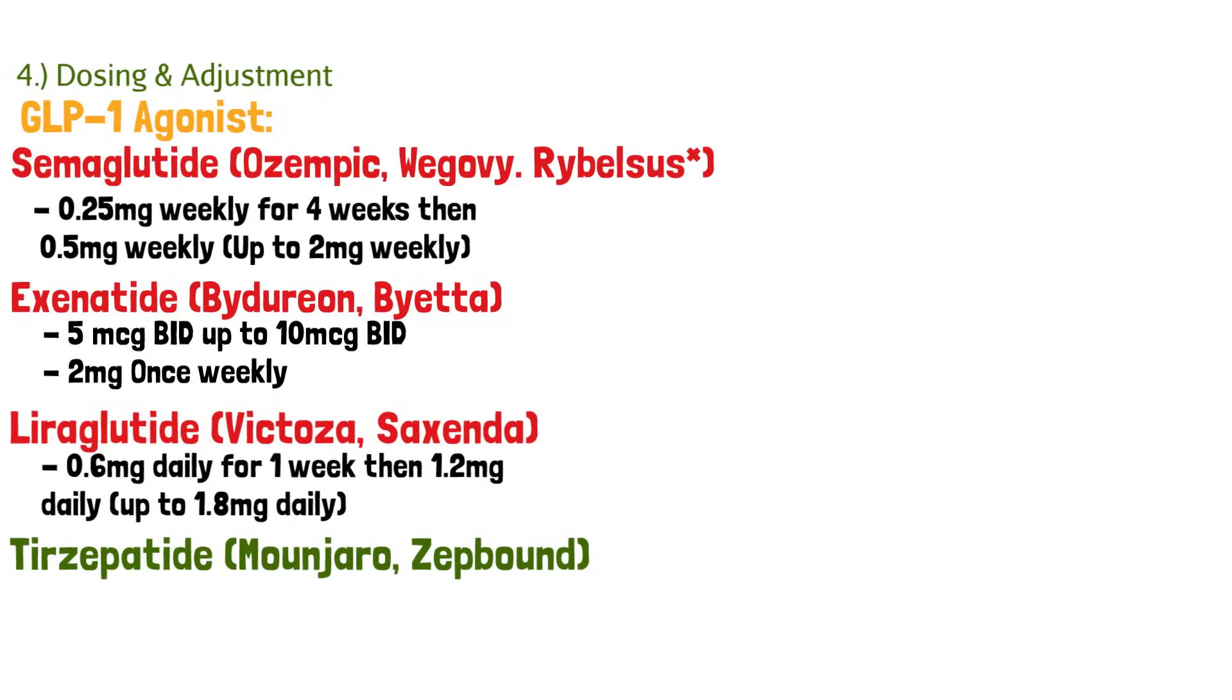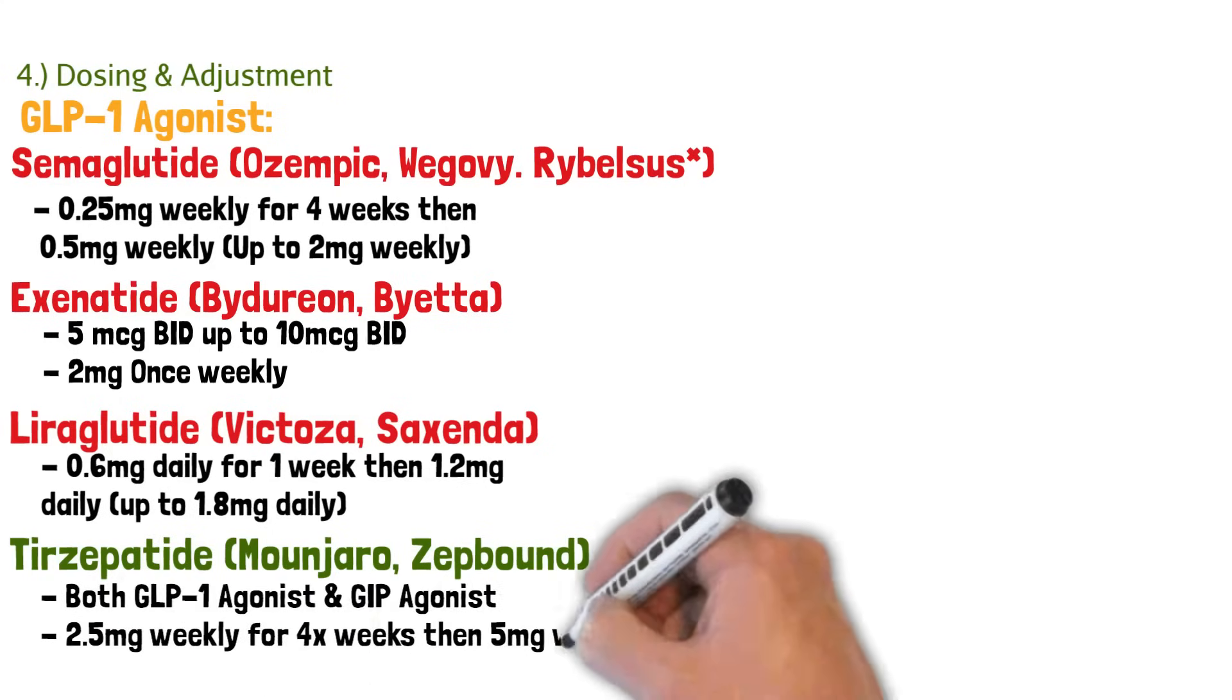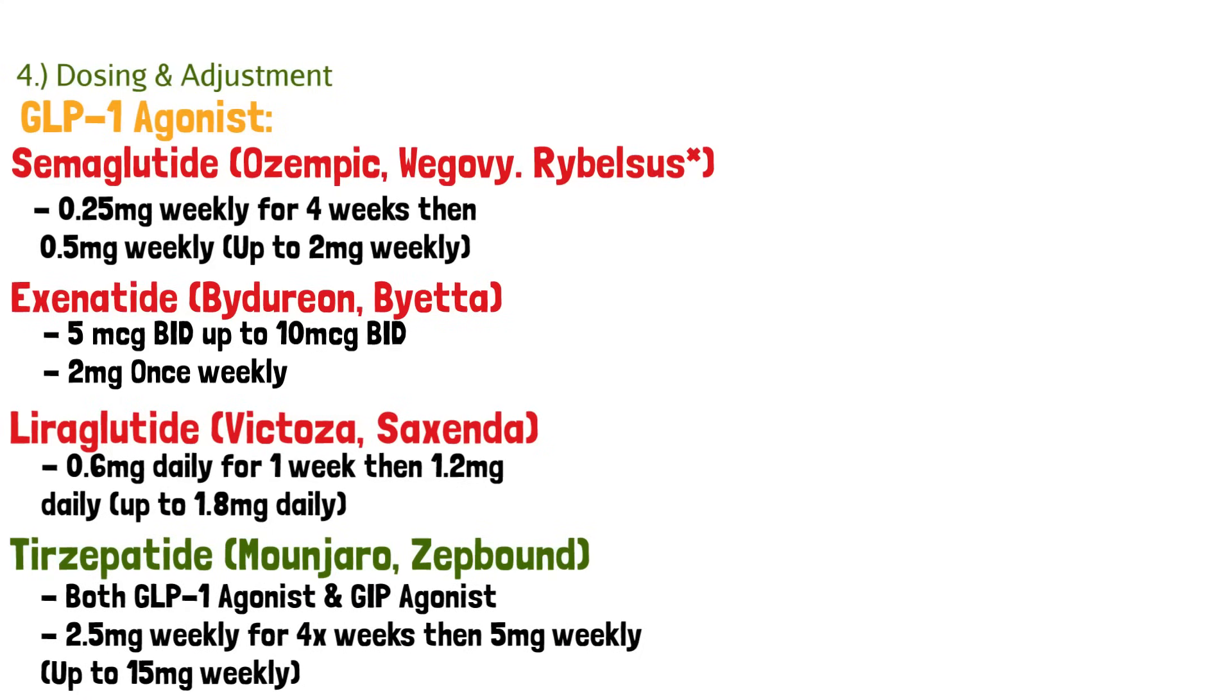And the last one we're going to outline is tirzepatide or Monjaro or Zepbound. This one's unique because it's both a GLP-1 agonist and a GIP agonist. So those incretins, it will target both. And here, again, it's a weekly injection. You have 2.5 milligrams weekly for the first four weeks, and then 5 milligrams weekly. And every week, you can titrate it up to 15 milligrams weekly.